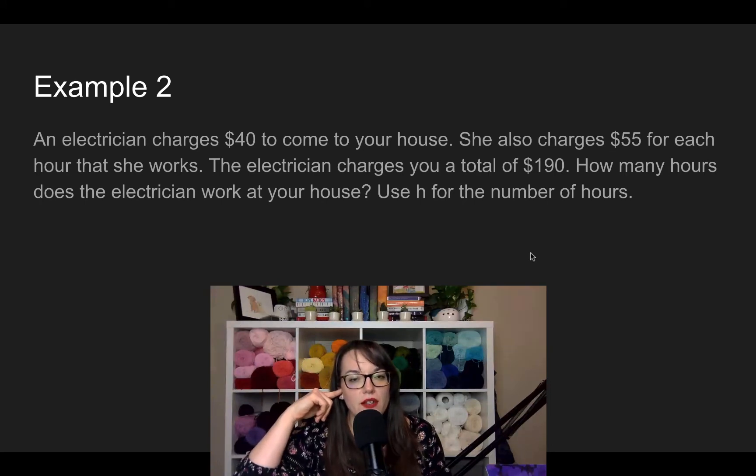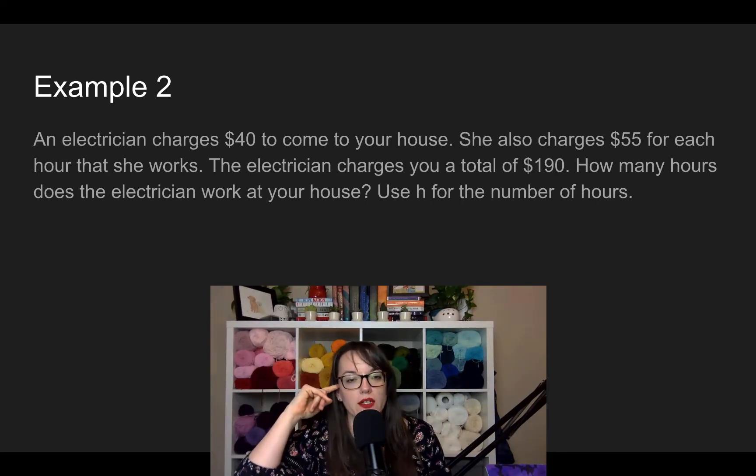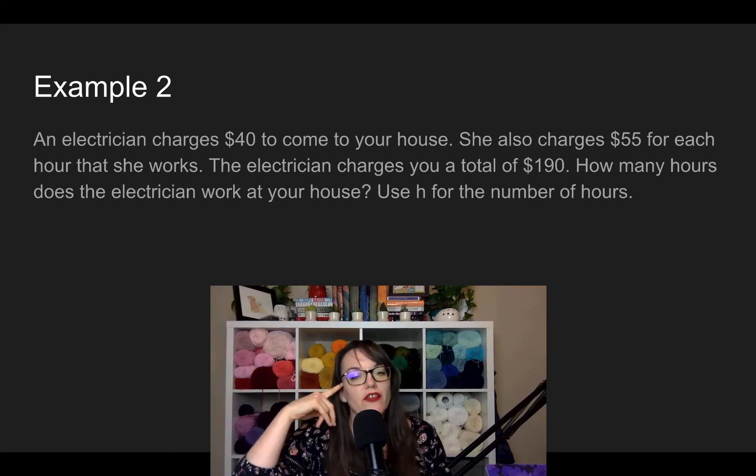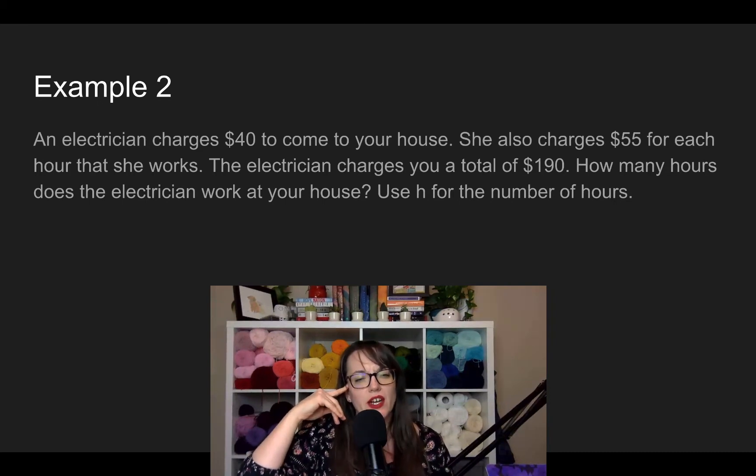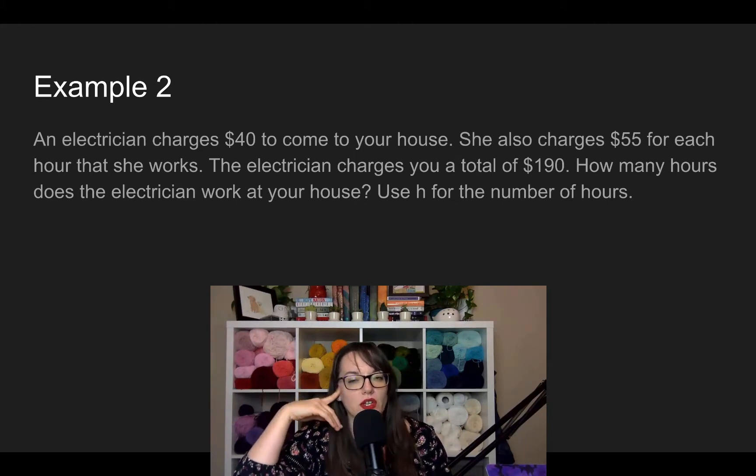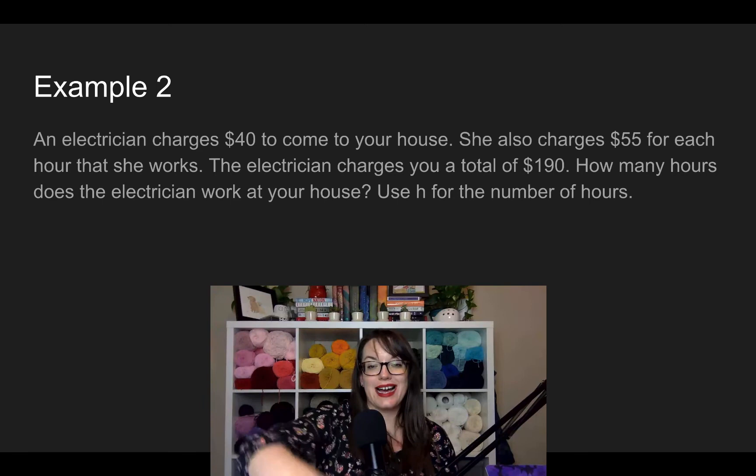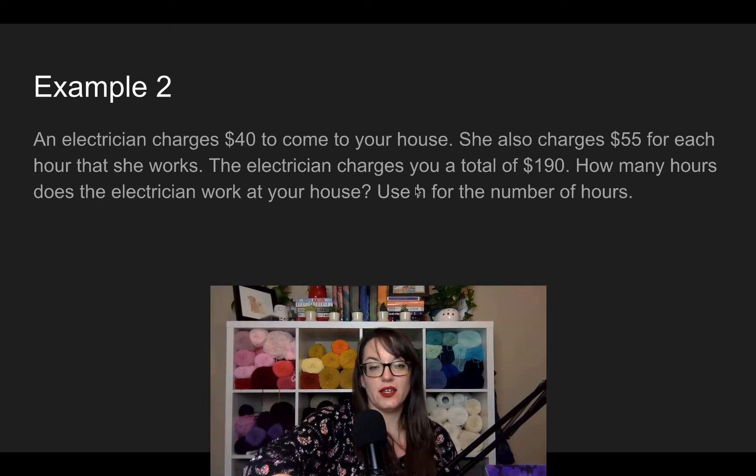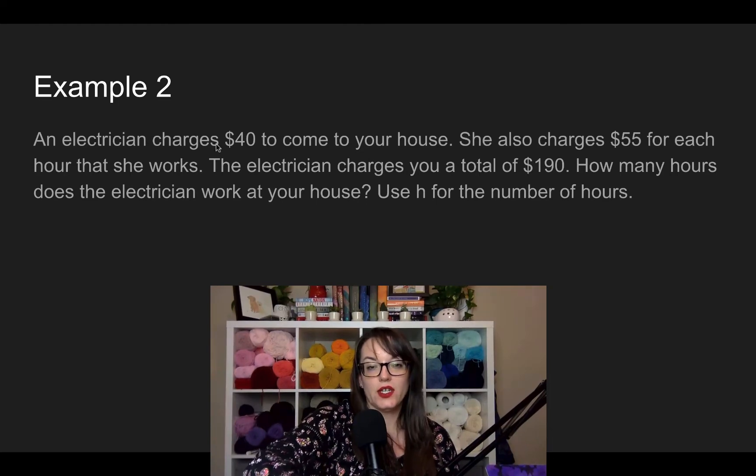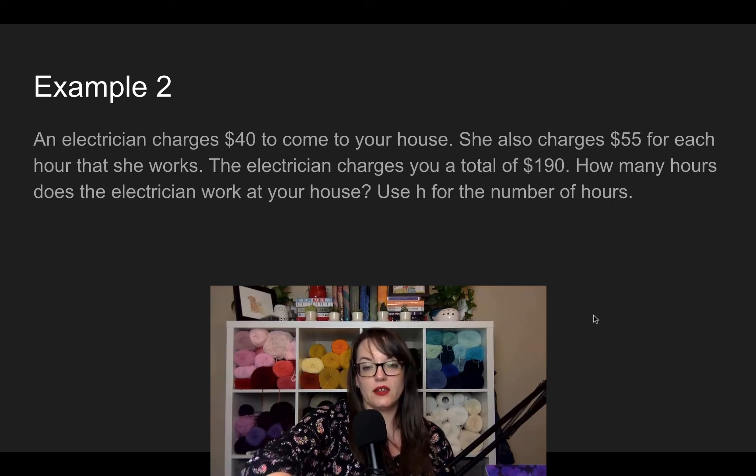Let's look at the next one. An electrician charges $40 to come to your house. She also charges $55 for each hour that she works. The electrician charges you a total of $190. How many hours does the electrician work at your house? Use H for the number of hours. Again, not solving it. What does this equation look like? So I see we've got $40 just to show up. So that's $40. Put that aside. And then she charges 55 times H because we've got this H right here. And we know it's $55 for each hour. So we've got 40 plus 55H equals total. So there's that equals, $190.